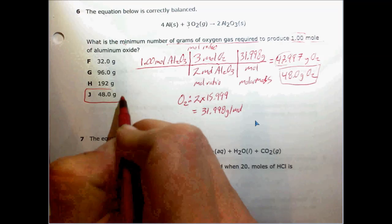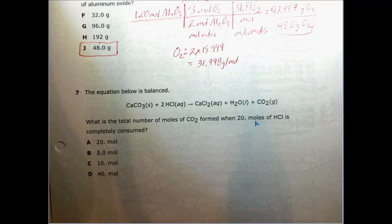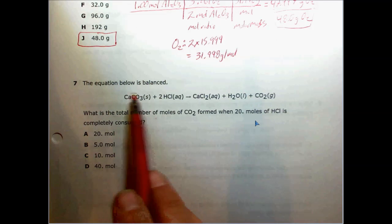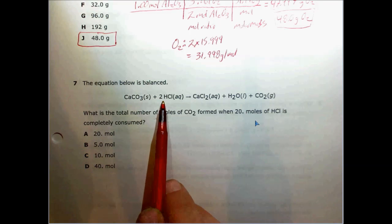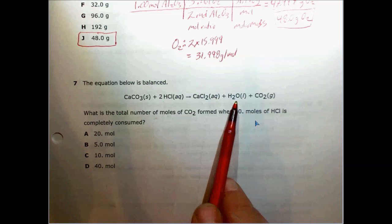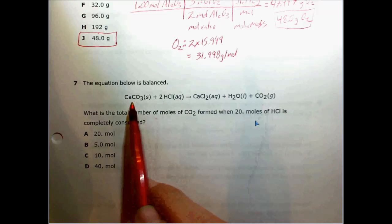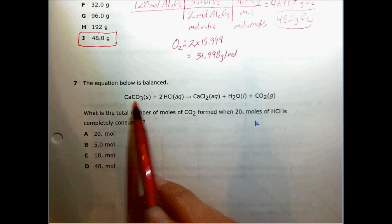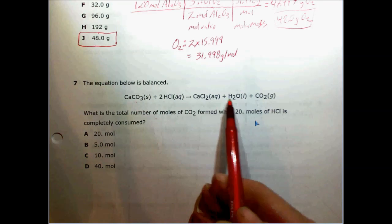So our answer is J. Question number seven — the equation is correctly balanced: calcium carbonate plus two hydrochloric acid yields calcium chloride plus water plus carbon dioxide. This is a decomposition reaction where the calcium carbonate is breaking down into CO2.